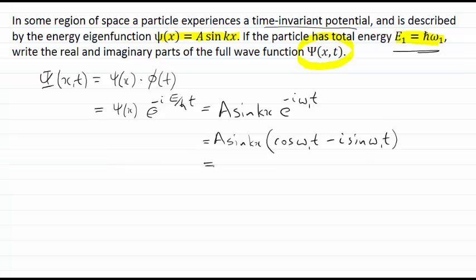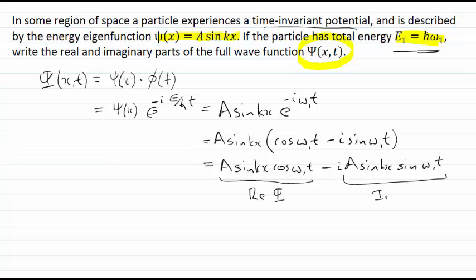And then quite clearly by expanding that I can find one that is completely real here, A sine kx cosine omega 1 t. And one here that involves the complex unit i, that'll be A sine kx sine omega 1 t. And so we can identify quite easily, that's going to be the real part of my full wave function. And this here is going to be the imaginary part of my full wave function there.